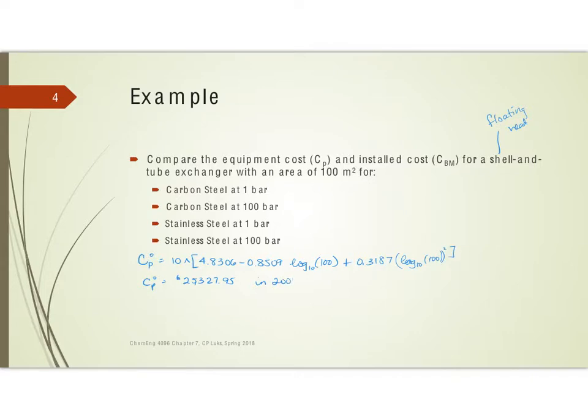Now, keep in mind, this is in 2001 dollars. So we can go ahead and adjust this to 2016 dollars. And then we don't have to worry about that again. So C sub P naught is 25,327.95. The CEPCI in 2001 was 394. And in 2016, it was 541.7. And so therefore in 2016 dollars, the price would be $34,822.71. So C sub P naught is the cost for the item of that size made out of carbon steel at one bar. So we do in fact have our first item done.